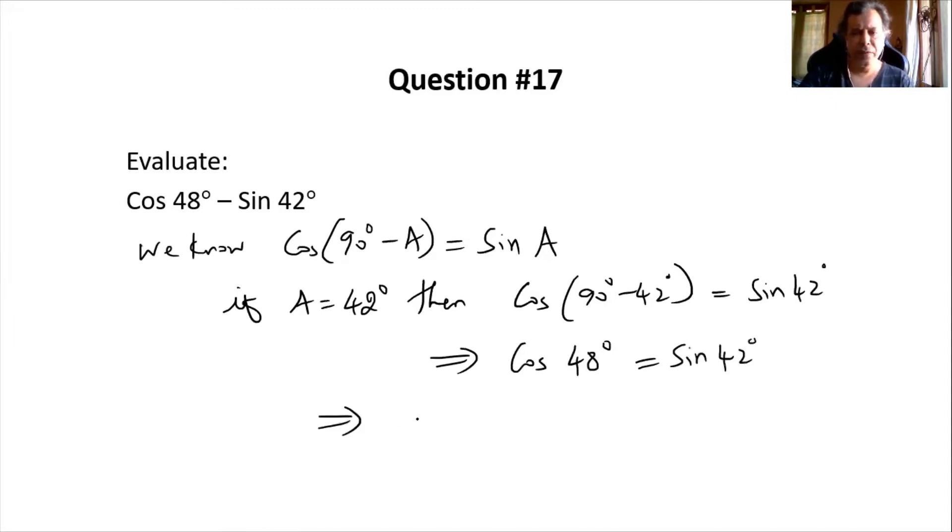Bringing this sin 42 to the left hand side, we have cos 48 degrees minus sin 42 degrees should be equal to zero.